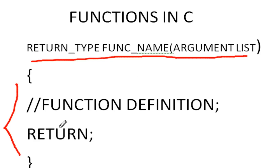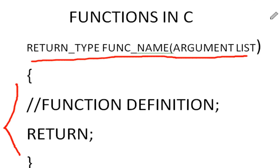This first line is also called the signature of the function. If we need to call the function, we use this signature — that is, the function name, the argument list, and the return type.